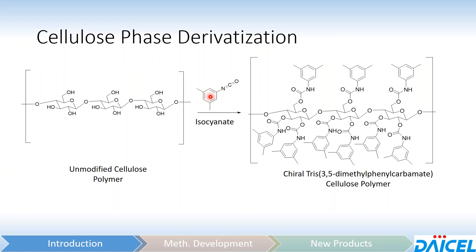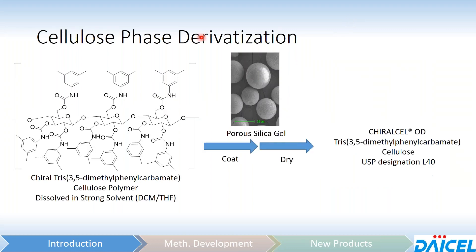— in this case, 3,5-dimethylphenyl isocyanate. Doing so will yield a cellulose derivatized tris(3,5-dimethylphenylcarbamate) polymer, which can then be dissolved in a strong solvent like dichloromethane or THF, coated onto porous silica gel, and dried down, yielding a coated phase — in this case, ChiraCell OD.